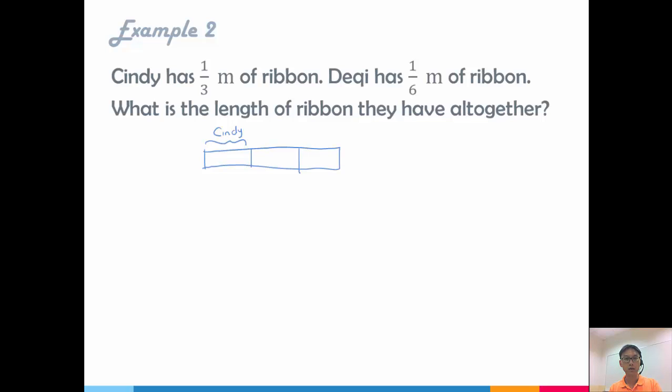Deai has 1 sixth meter of ribbon. So the same whole, the same ribbon, she has 1 sixth meter of it. But I have thirds here, so I need to further divide this into 6. So Deai has 1 sixth. So what's the length of ribbon they have altogether? So what is this length here? Well, based on the diagram, you can see it's actually 3 out of 6. But let's work it out.